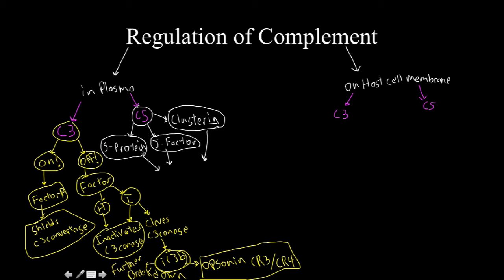But anyways, what all of these guys do, all three of these, in the plasma, they block the formation of the anchor for the membrane attack complex. So I'm just going to say that they block C5β through C8.